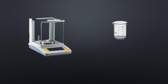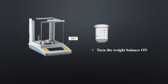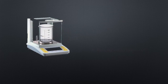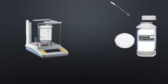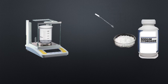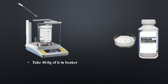First of all, turn the weight balance on and place the beaker on the weight balance. When the beaker is placed, it displays its weight. Adjust the weight using the tare button so the weight of the beaker appears as zero. Then add sodium hydroxide into the beaker using a spatula — take 40 grams of it.